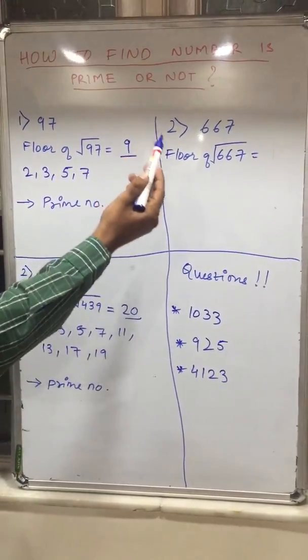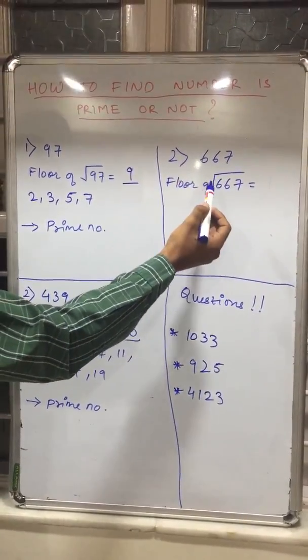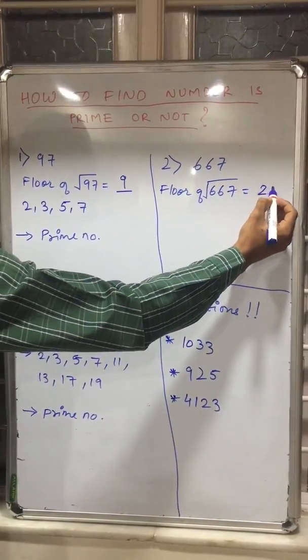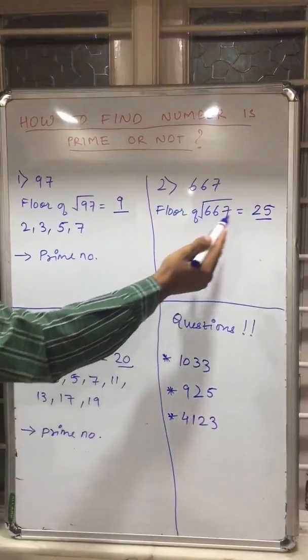Now another example, 667. So what is the floor of root 667? It will be 25. So just write all the prime numbers before 25.